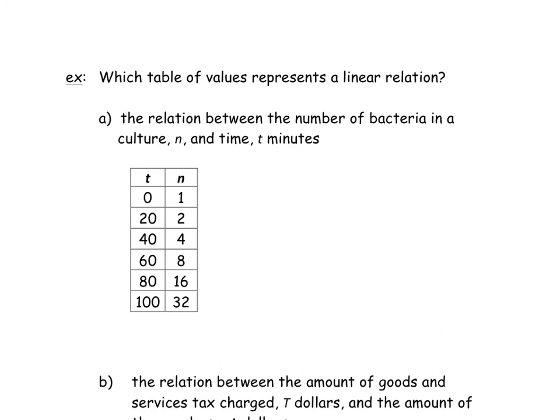Let's investigate a couple table of values and understand which of these represents a linear relation. Again, the linear relation, by definition, is a constant rate of change. So every time a D or N goes up, that has to go up the same amount every time. T, if you look at it, is the time in minutes that the number of bacteria is growing.